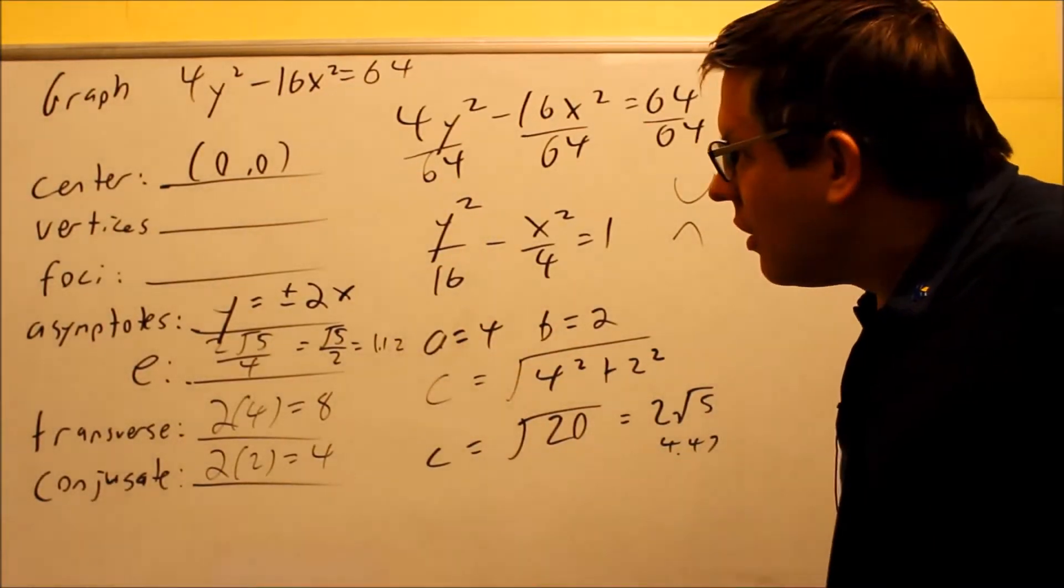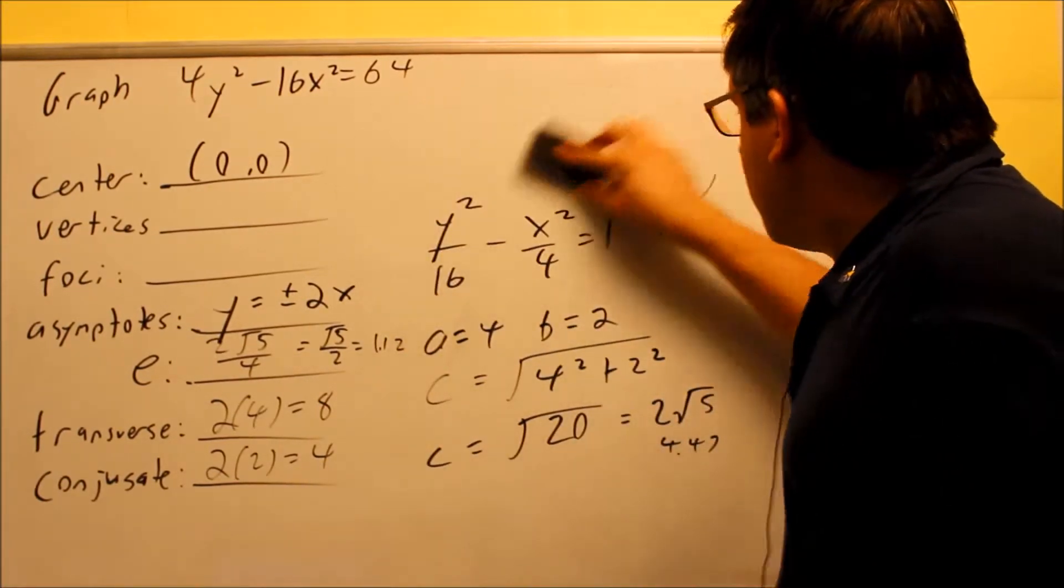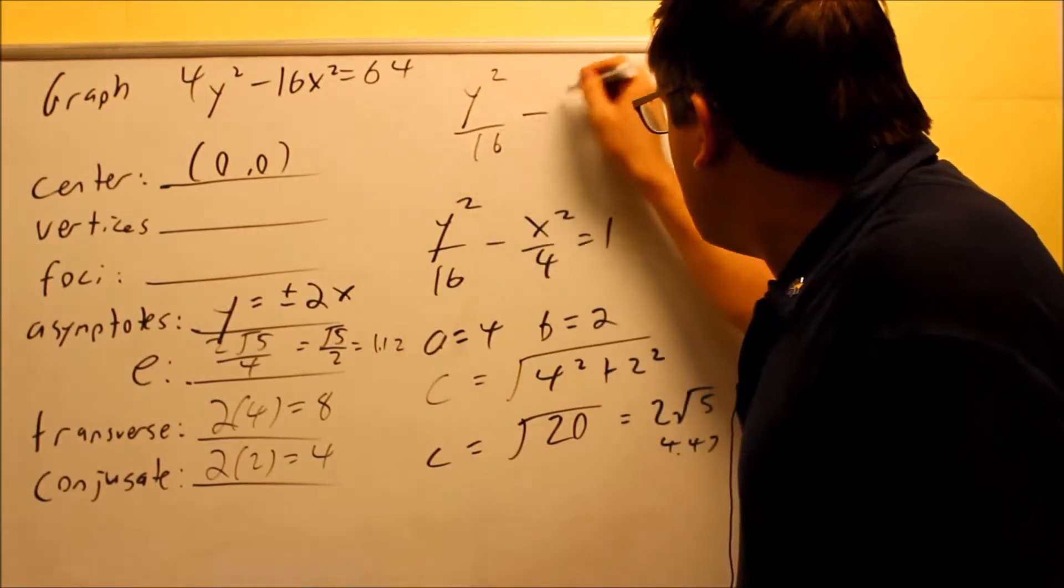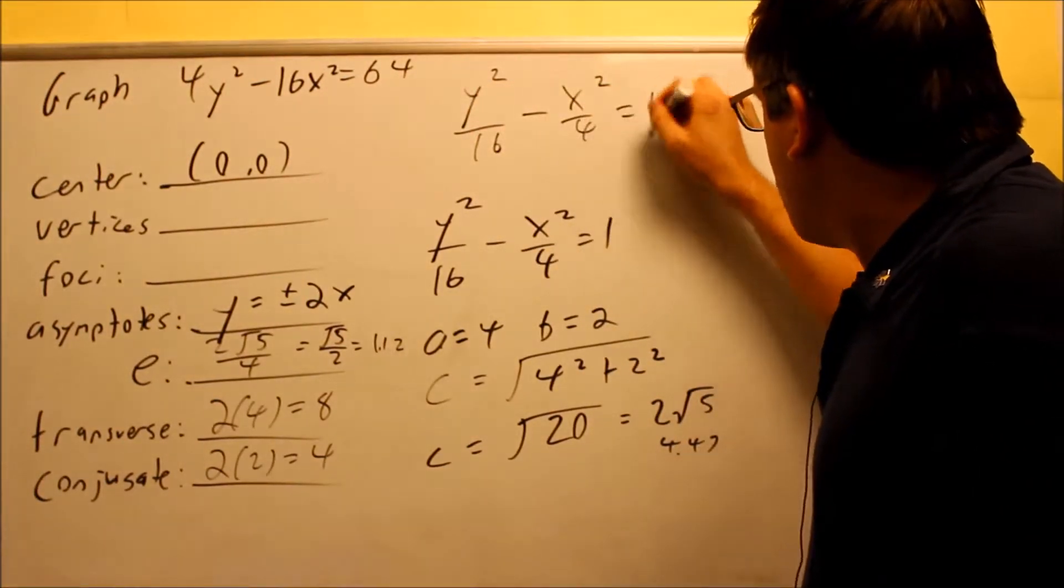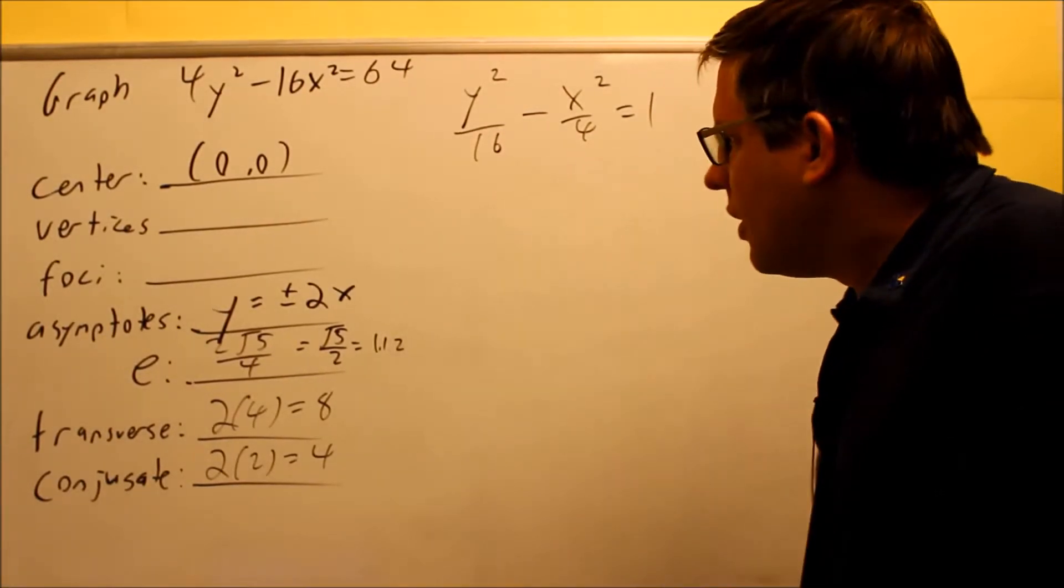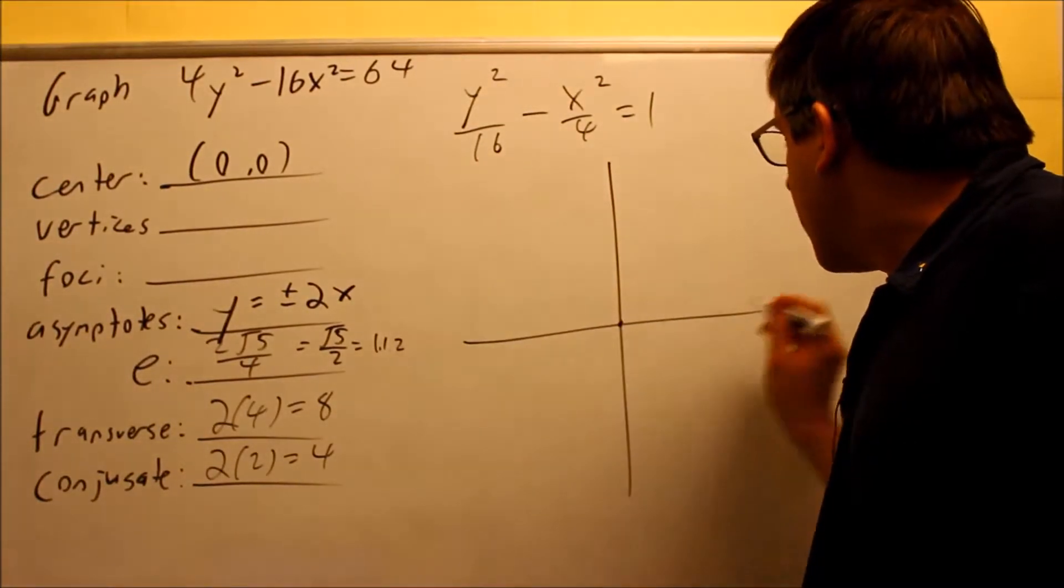Next, we want to look at the vertices and the foci. So here, go ahead and rewrite this up here. This is y squared over 16 minus x squared over 4 equals 1. That's the one that we did when we divided everything through by 64, we got that one. Center's going to be at 0, 0 right here.